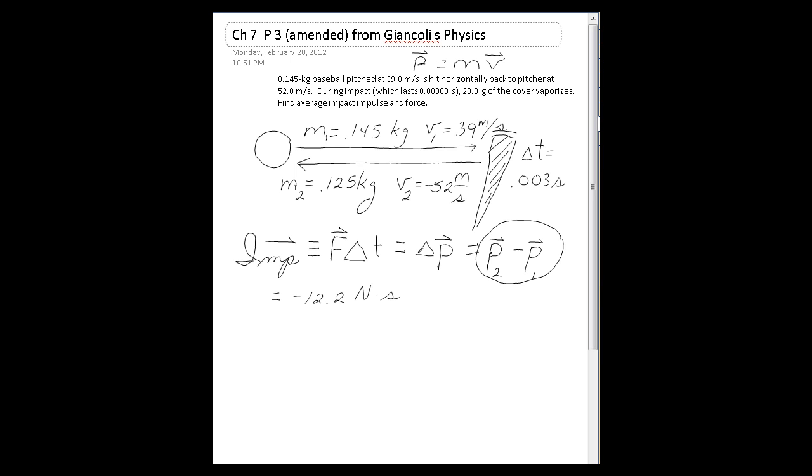The problem actually asked us for the force on the ball, so we need to find that also. Since impulse equals force times time interval, and we now know the impulse and we have the time interval, I can take the impulse definition, solve it for the force, and be ready to find the force. So I'm going to divide both sides by the time interval, that will give me force equals impulse divided by the time interval, so I'll have a negative 12.2 newtons divided by a time interval of 0.003.